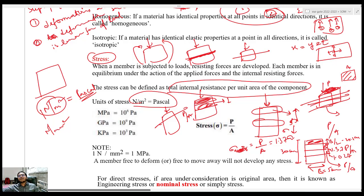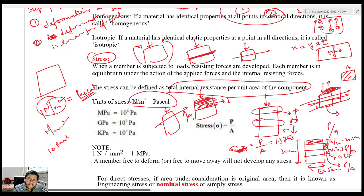And what does Newton per meter square mean? Can you imagine the figure? For example, if the mass of one body is 1 kg, the force being exerted is equivalent to 9.8 Newton. So whenever someone says 100 Newton force is acting, you can imagine a 10 kg body placed on your hand — approximately 100 Newton force is acting on your body.